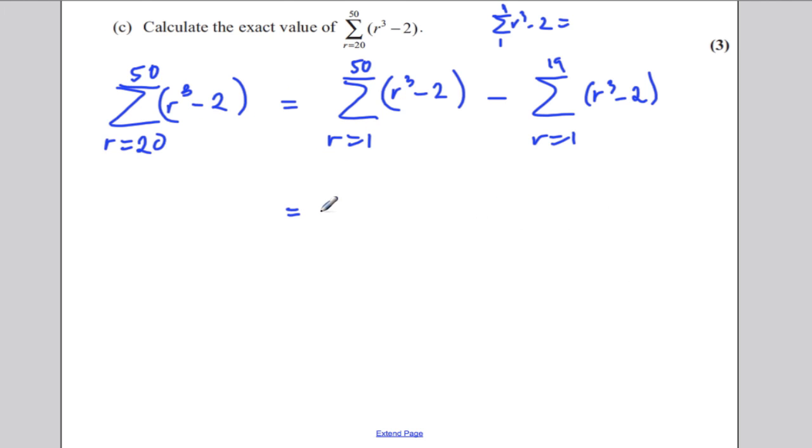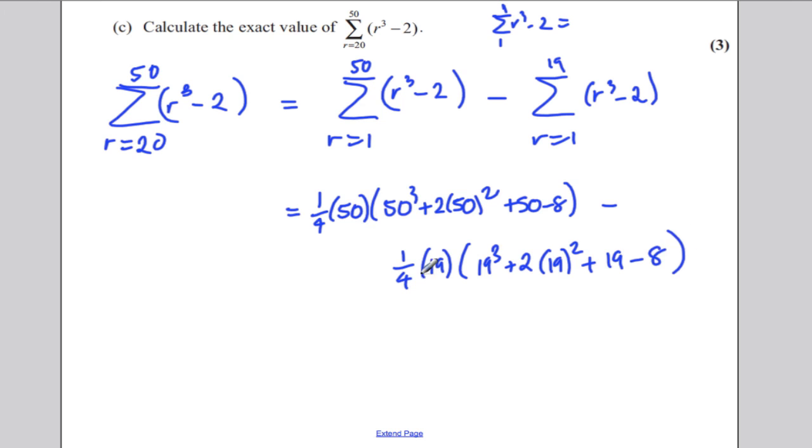This formula here, we know that the sum from 1 to N of R cubed minus 2, we know it's given by this: a quarter N times N cubed plus 2N squared plus N minus 8. So all we have to do is substitute 50 in here. So it would be a quarter times 50, and here we'd have 50 cubed plus 2 times 50 squared plus 50 minus 8. That would be that sum. And we'll be subtracting a quarter times 19 times 19 cubed plus 2 times 19 squared plus 19 subtract 8. So all we'd be doing is working that on our calculator. And if you do that, which I'm just doing now, you get yourself 1,589,463. And then you've got the correct answer.